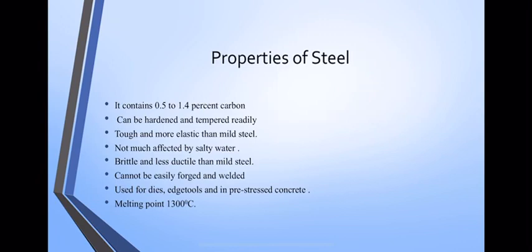Properties of steel: it contains 0.5 to 1.4% carbon. It can be hardened and tempered readily. It is tough and more elastic than mild steel. It is not much affected by salty water. It is brittle and less ductile than mild steel. High carbon steel cannot be easily forged and welded, but it is possible in low carbon steel. It is used for dies, edge tools, and pre-stressed concrete. The melting point of steel is 1300 degrees Celsius.